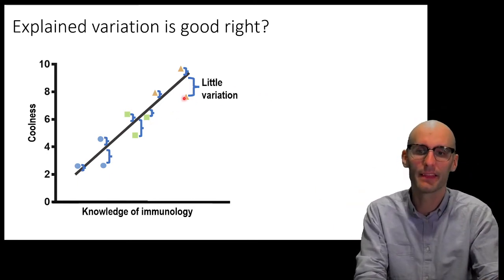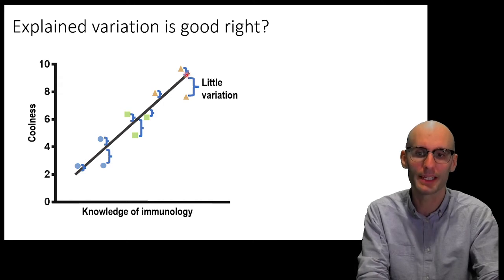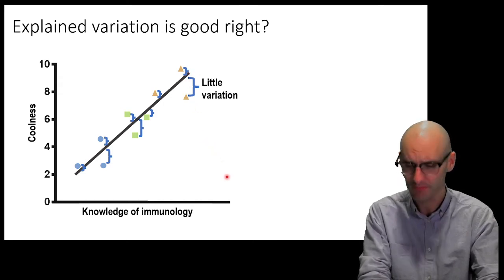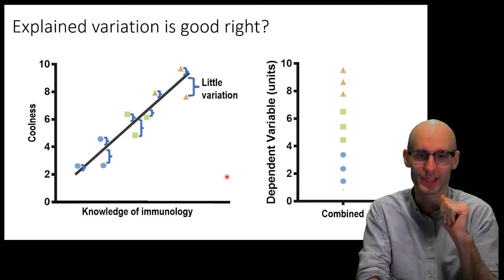Then they look at how far the data points are from that expected value, that linear regression. So, this is the data point. This is what we expected the data point to be. So, the variation is the distance between that two. And we can see that there's little variation there.